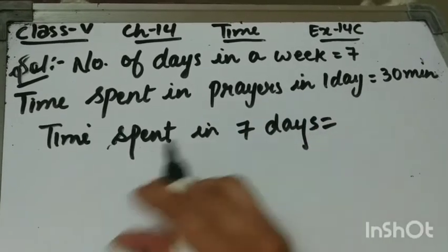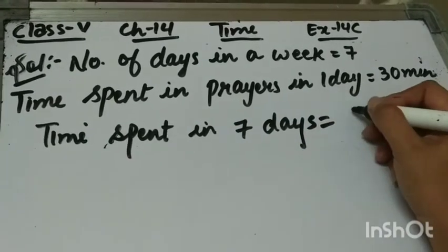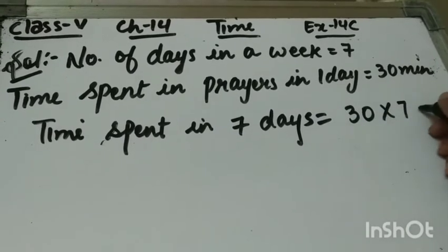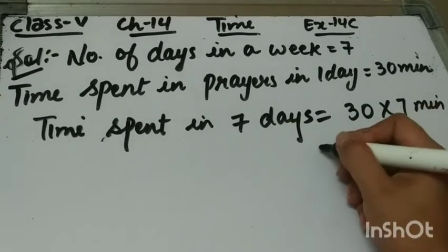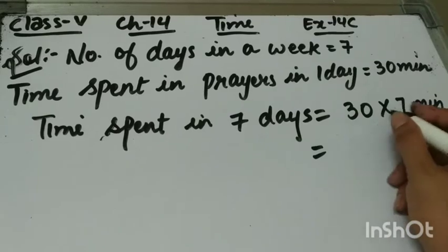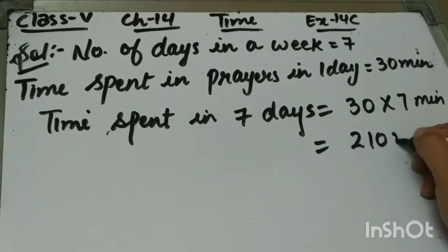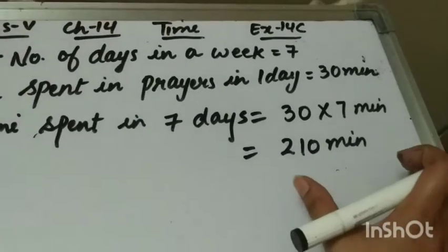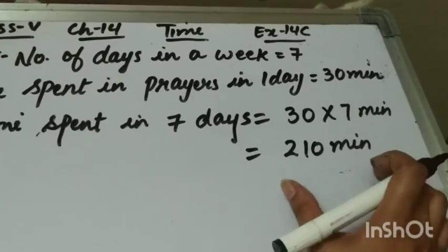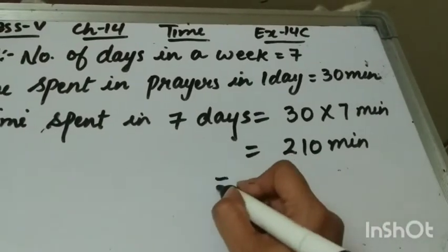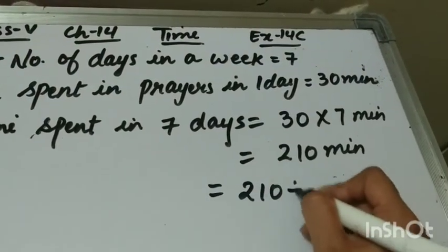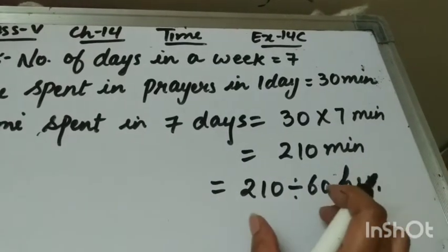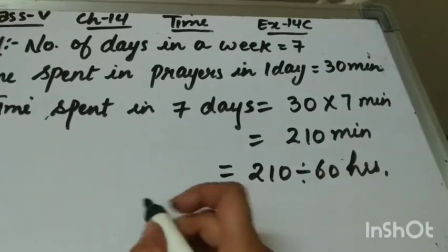So time spent in 7 days is equal to 30 multiplied by 7 minutes, and this is equal to 210 minutes. Now we will convert this minutes into hours by dividing it by 60. To convert it into hours, we will divide 210 by 60.